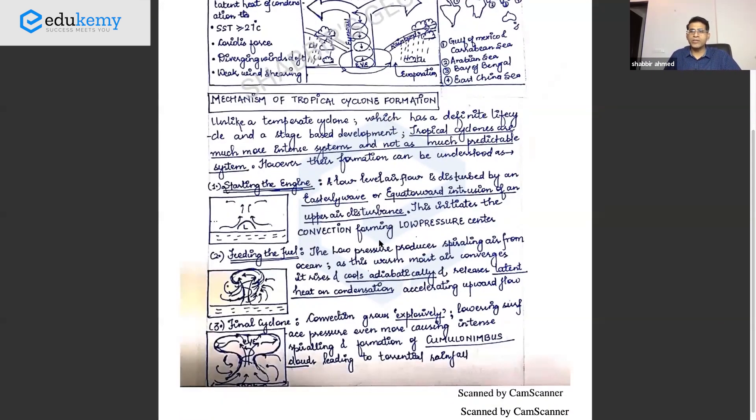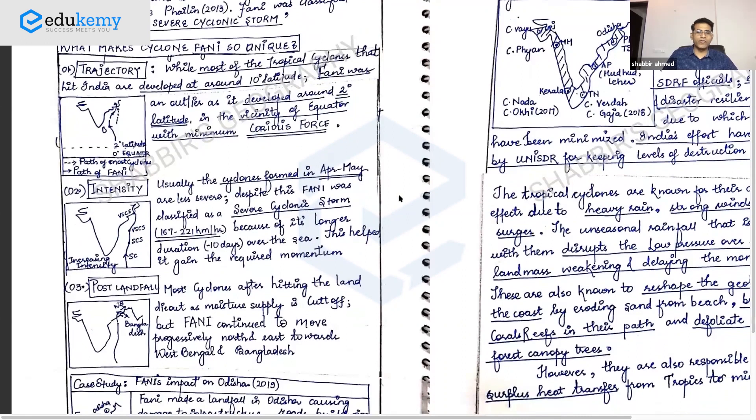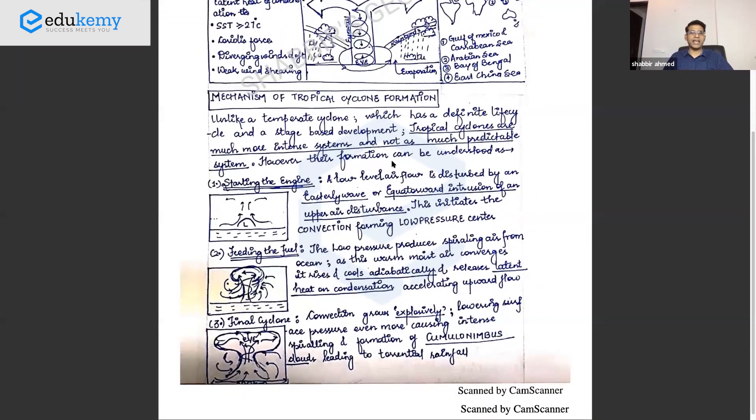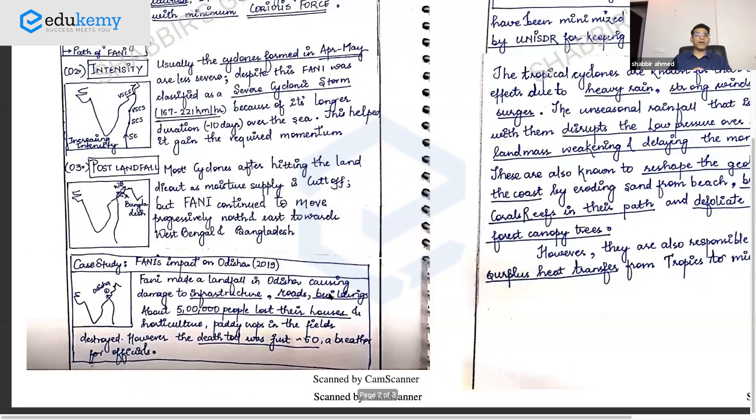Look at the mechanism of tropical cyclones. In half a page: unlike temperate cyclones which have a definite life cycle and stage-based development, tropical cyclones are much more intense systems, not as predictable, but their formation can be understood as starting engine, filling the system, final cyclone. It's not typically how temperate cyclones develop - initial low pressure, intensification, development of proper cyclone, then ultimate decline and death when it hits land. Now we move towards the development of Fani.